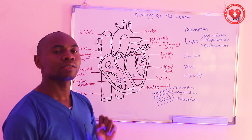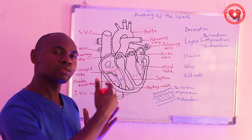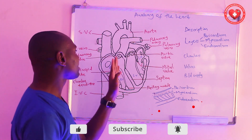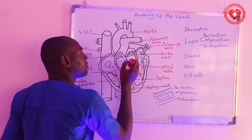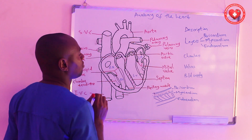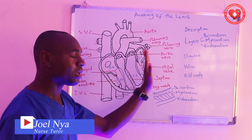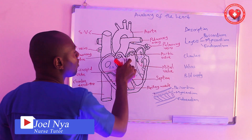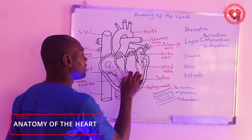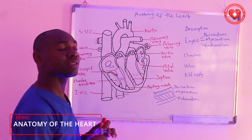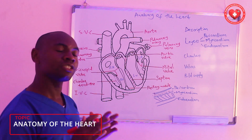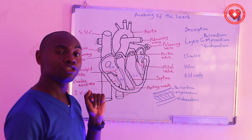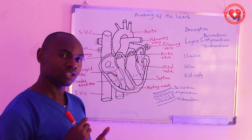Now we are going to look at the chambers of the heart. The heart is divided into two parts: the right and the left. In between the right and the left, there is a structure called the septum, which divides the right part from the left. The upper septum divides the right atrium from the left atrium — this is called the interatrial septum. The lower septum divides the right ventricle from the left ventricle — this is called the interventricular septum. The heart has four chambers: the right atrium, the right ventricle, the left atrium, and the left ventricle.